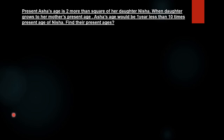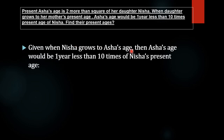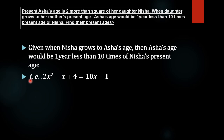Now, it is given that when Nisha grows to Asha's age, then Asha's age would be 1 year less than 10 times Nisha's present age. That is, when Nisha grows to Asha's age x² + 2, Asha's new age equals 2x² minus x plus 4. By the given condition, this age is also equal to 10 times Nisha's present age minus 1, that is, 10x minus 1.